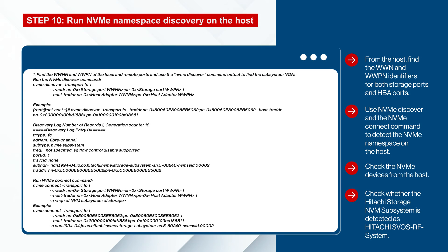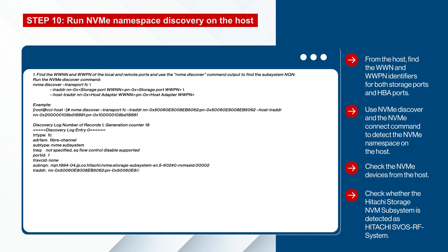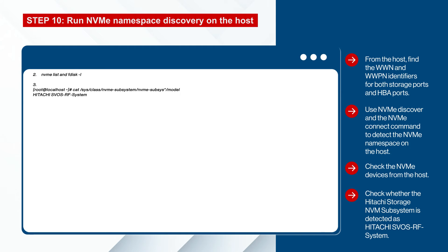The next step is to run NVMe namespace discovery on the host. First, find both storage ports and HBA ports WWNN and WWPN identifiers on the host. Then run NVMe discovery and NVMe connect to detect the NVMe namespace on the host. Note that you may need to restart the system after this step. Verify that the NVMe namespace is discovered on the host and that the Hitachi storage NVM subsystem is detected as Hitachi SVOS RF system.